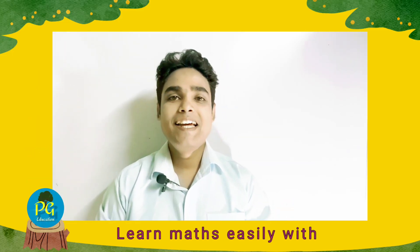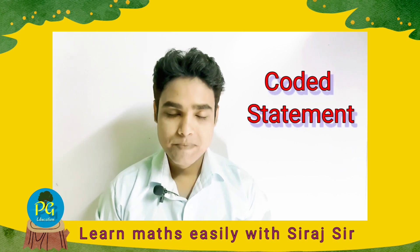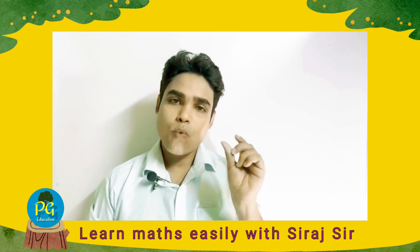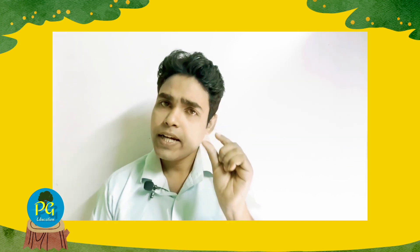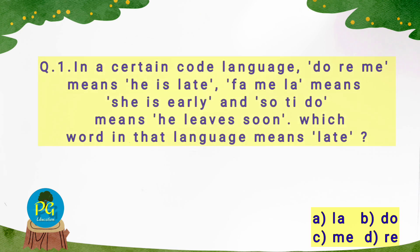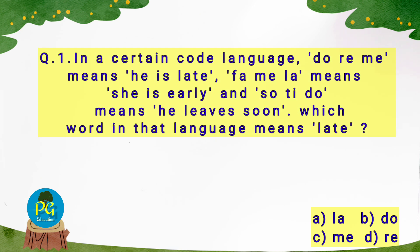Hello and welcome to our next video. In this video we will understand coded statements. In the previous video we understood word-to-word code in coding and decoding, but in this video we will understand how to find out the actual word from the given statement. Let us start. Coded statement question number one: in a certain code language, 'do re me' means 'he is late', 'fa me la' means 'she is early', and 'so ti do' means 'he leaves soon'. Which word in that language means 'late'? Options are: A) la, B) do, C) me, D) re.